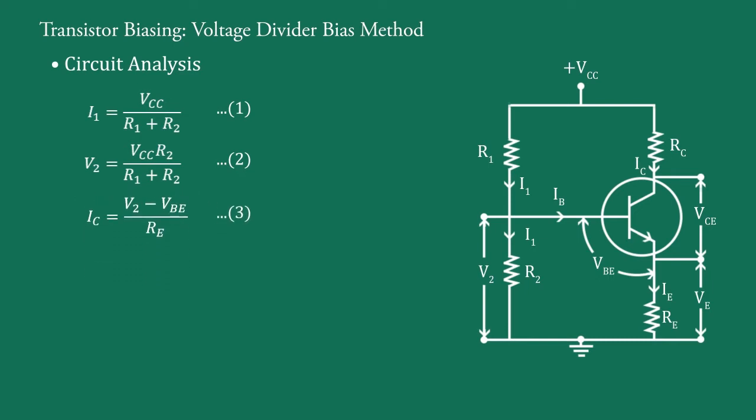Now, applying Kirchhoff's law to the output circuit, that is this one, we get VCC equal to ICRC plus VCE plus IERE. But IE and IC are approximately equal. Therefore, we take here IE equal to IC.